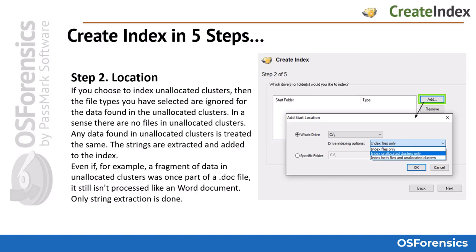If you choose to index unallocated clusters, the file types you have selected are ignored for the data found in those clusters. In a sense, there are no files in unallocated clusters — any data found in unallocated space is treated the same. The strings are extracted and added to the index. For example, a fragment of data in unallocated space that was once part of a document file is still not processed like a Word document; only string extraction is done.